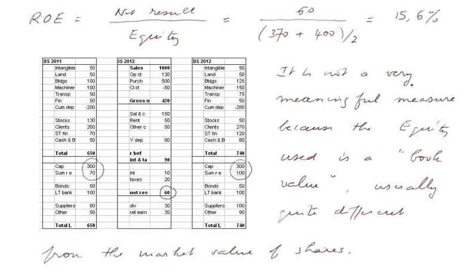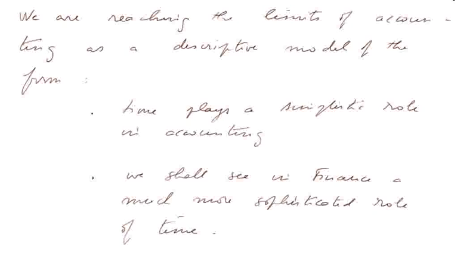It is not a very meaningful measure of the profitability of the firm because equity here is a book value. It's a value produced by accounting and it's usually quite different from the market value of shares and the market value of equity. Indeed, we are reaching the limits of accounting as a descriptive model of the firm. Time plays a simplistic role in accounting, and we shall see in a course in finance a much more sophisticated role of time.